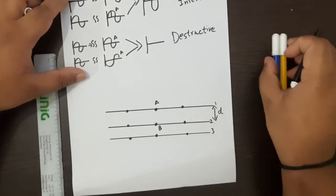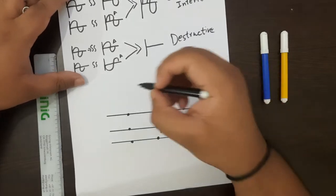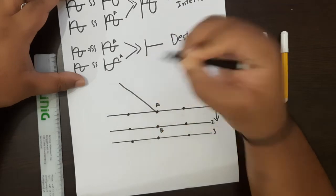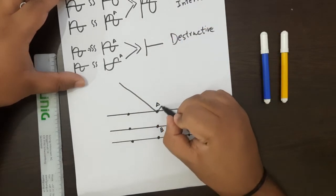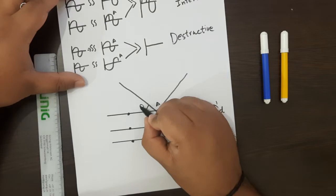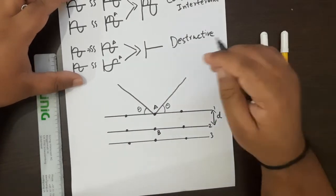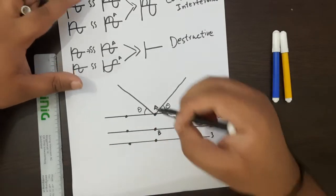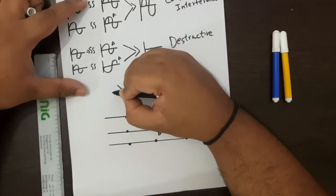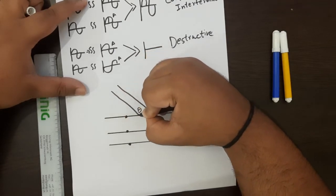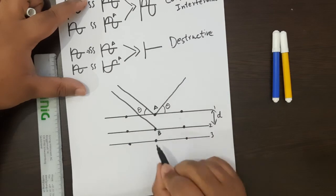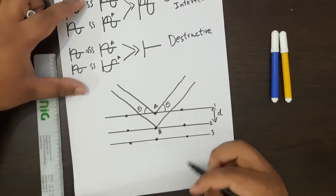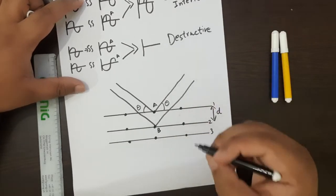Suppose this is a primitive cubic structure. I have a particular wave of light that comes in and gets scattered by an atom called A, scattered away at some angle theta. These two angles will be the same because the angle of incidence and the angle of reflection are equal. At the same time, I have another wave of light from the same source — it gets scattered by an inside atom B and also comes out parallel.